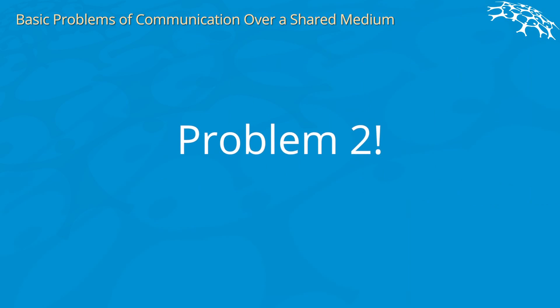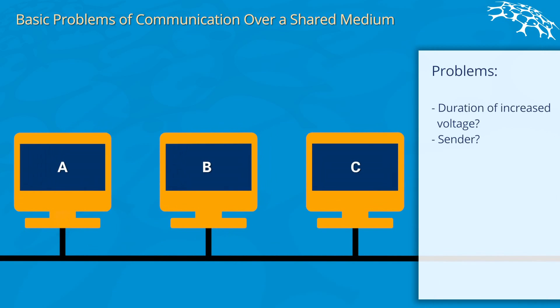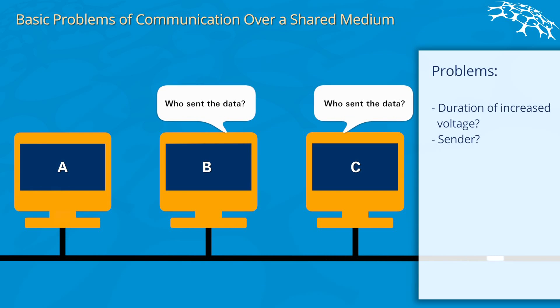Another problem that you would get is, who is actually the sender of the data? Let's assume computer A sends a bit of data. At some point in time B receives the data, then C receives the data, and everyone wonders who actually sent the data, and you cannot figure this out right away.